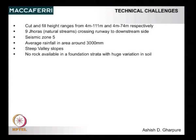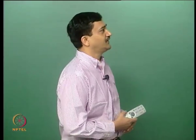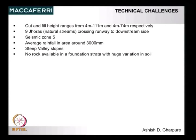What were the technical challenges in this project? Cut and fill heights range from 4 meters to 111 meters on the cut side, and 4 meters to 74 meters on the fill side. There were 9 jhoras — jhora is the local term for natural stream — crossing the runway from uphill to downhill. This is in seismic zone 5, the highest seismic zone in the country. The average rainfall in the area is 3000 millimeters every year, with very steep valley slopes and no rock available in the foundation strata — it is completely a soil hill.